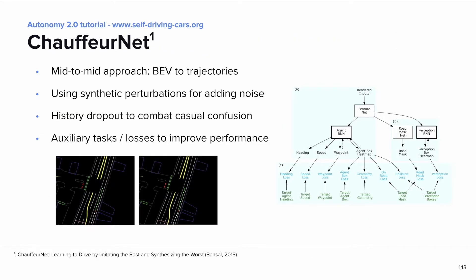ChauffeurNet chooses a slightly different approach, using a mid-to-mid approach instead of end-to-end — going from a rasterized bird's-eye view around the car to outputting trajectories. They generate synthetic perturbations to add noise and also add history dropout to combat causal confusion, where the model learns to extrapolate from previous actions instead of correctly learning how to drive. Further, they introduce several auxiliary losses and tasks, which improve performance — a technique common to several fields including computer vision.